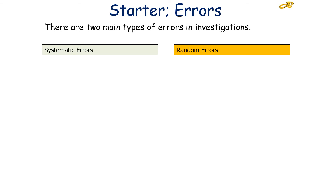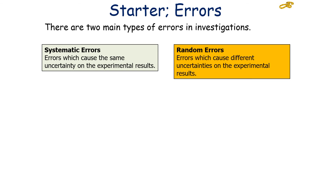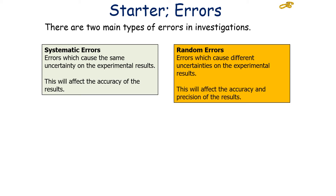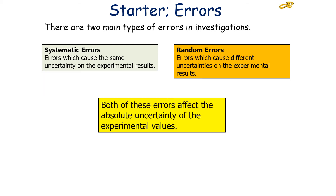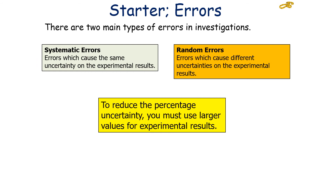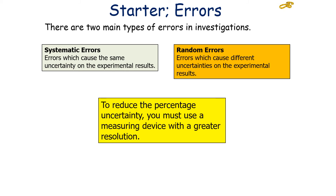There are two types of errors in investigations: systematic errors and random errors. A systematic error causes the same uncertainty on experimental values for every measurement, while random errors cause different uncertainties on experimental results. Systematic errors affect the accuracy of the result, while random errors affect both accuracy and precision. Both types affect the absolute uncertainty of the experimental values. To reduce the percentage uncertainty, use larger values for experimental results or use a measuring device with a greater resolution.